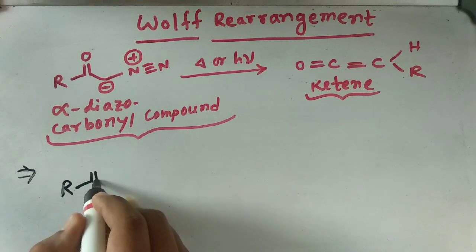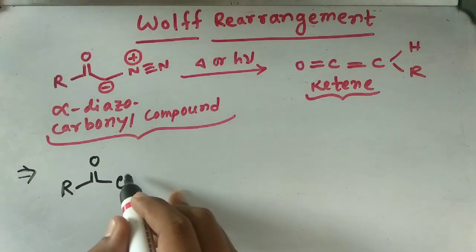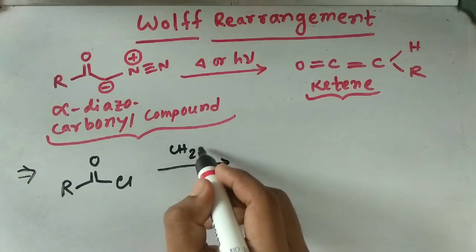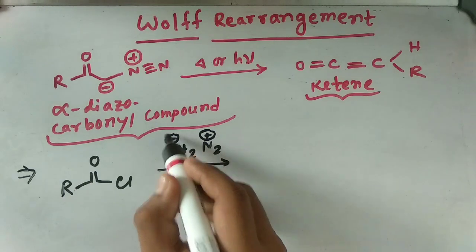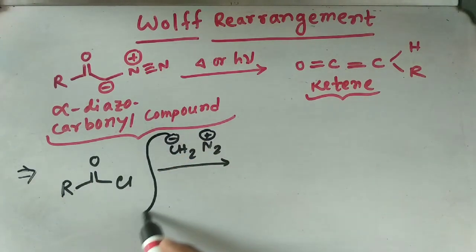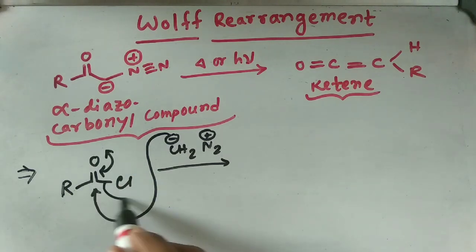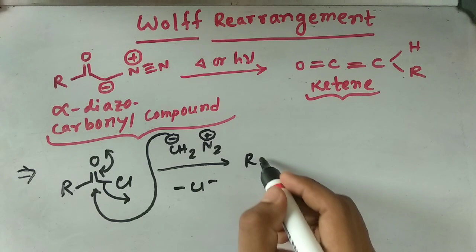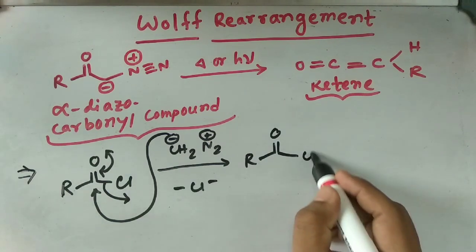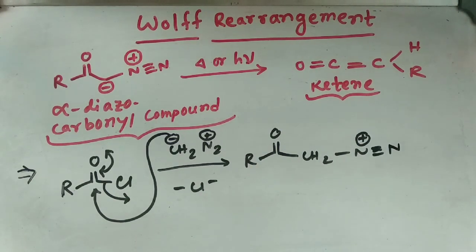To form the alpha diazo carbonyl compound, we start with an acid chloride — RCOCl. When this acid chloride is treated with diazomethane, which acts as a very strong base, the diazomethane attacks the carbonyl carbon. The oxygen gets a negative charge, comes back, and Cl minus leaves the system. What we finally get is RCO-CH2-N2 plus.